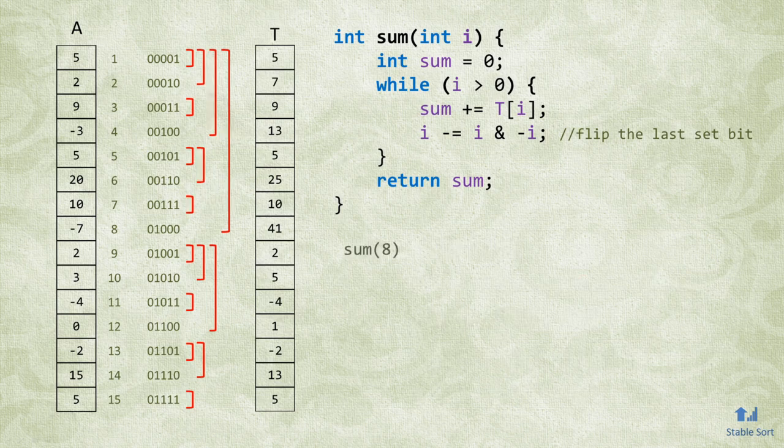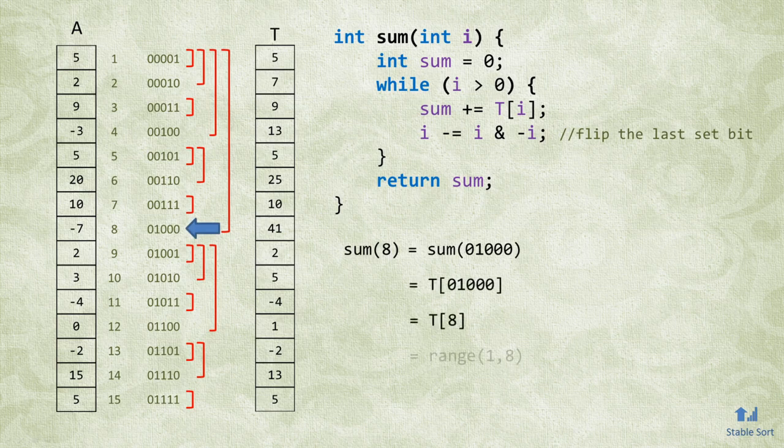Here's another example. The running sum from 1 to 8 is simply the value at index 8. 8 in binary is 01000, so there's only a single one bit. Thus, the loop will execute only once. In other words, the value at index 8 encompasses the whole sub-range of 1 to 8. The running time of this function is obviously log base 2 of n, since the while loop repeats how many 1 bits there are in the index number.